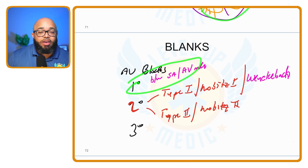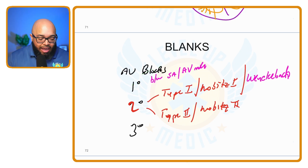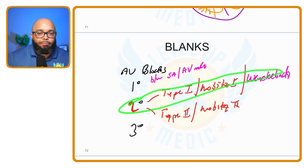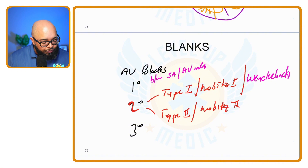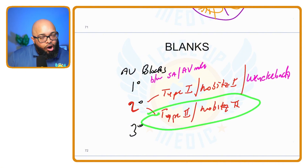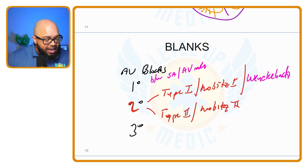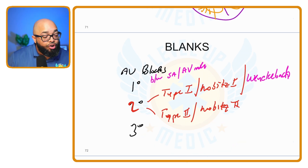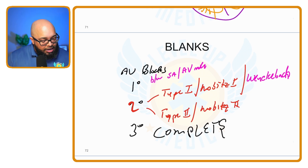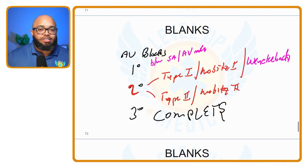To summarize the locations: first degree is a block between the SA node and the AV node, generally just before the AV node. Second degree type one is a partial block of the AV node. Second degree type two is often a partial block of the bundle of His. Third degree is a complete block. Now let's talk about the characteristics of each.